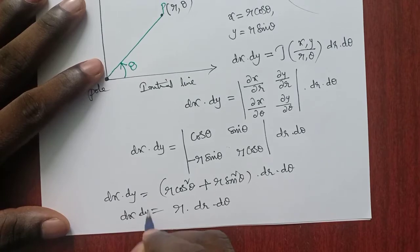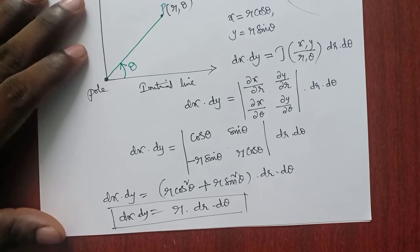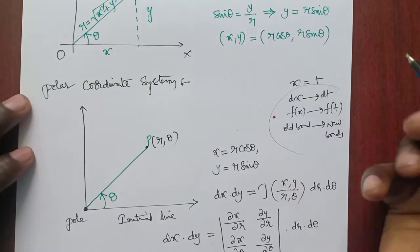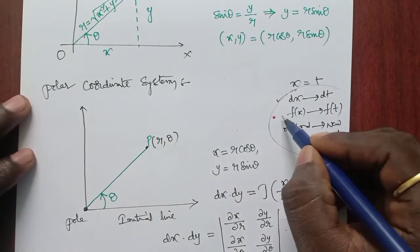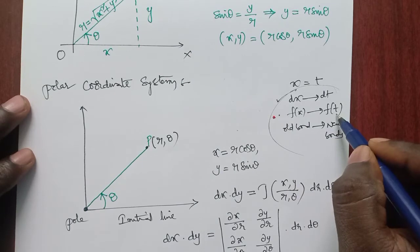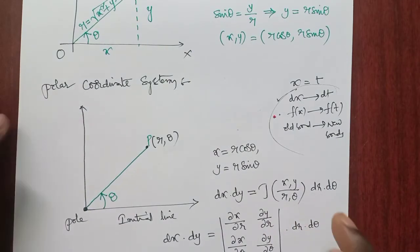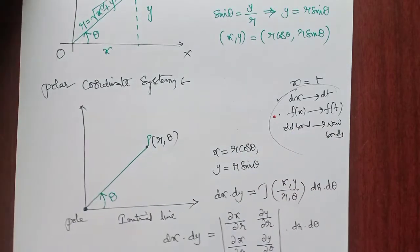So dx dy changes to r dr dθ. We also need to change the complete function into terms of r and theta, and change the boundaries accordingly. Now we will solve one problem so that we can understand the concept of polar form.